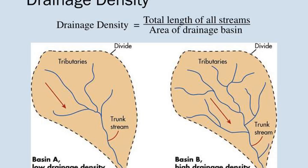For a drainage density to be higher, there must be more precipitation — more heavy rains occurring in the area. This precipitation forms more tributaries, the drainage basin accumulates more water, and the drainage density covers a larger, wider area.